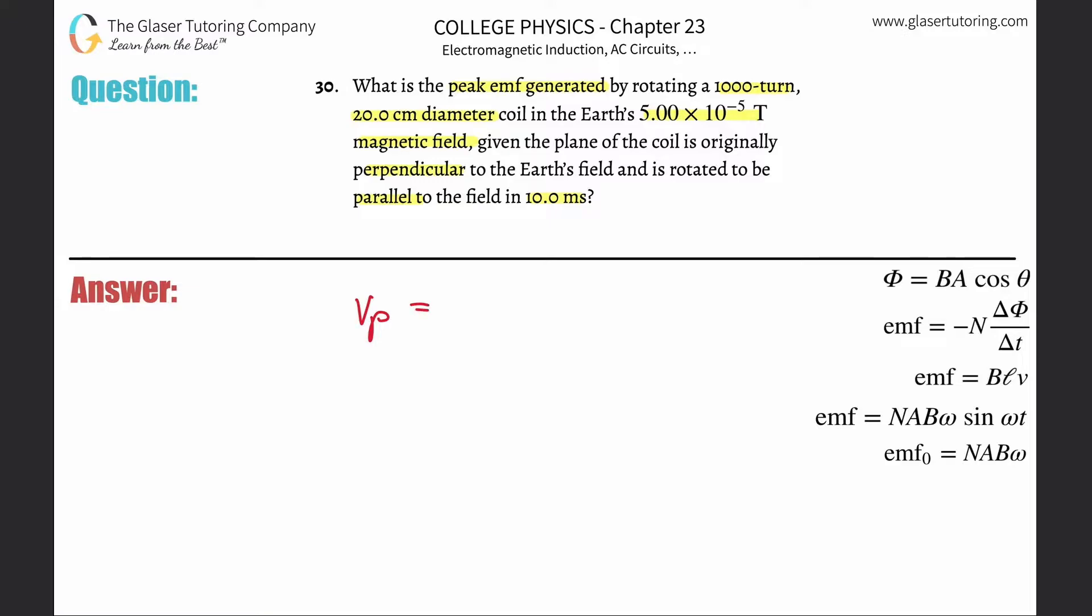In order to find that we need to multiply the number of turns of the coil, the cross-sectional area of the coil that is experiencing the magnetic field, multiplied then by the magnetic field strength, and then multiplied by the angular velocity.